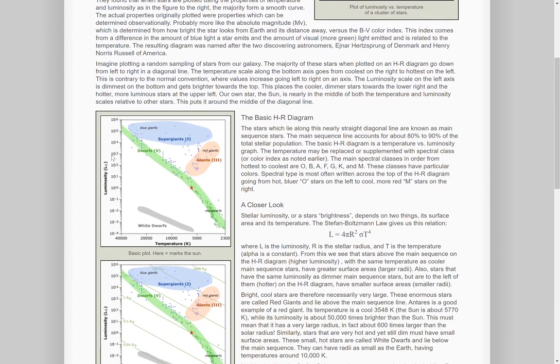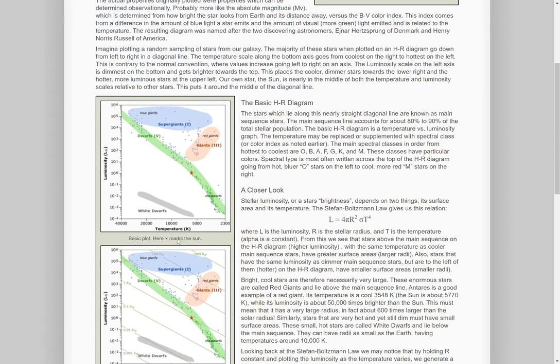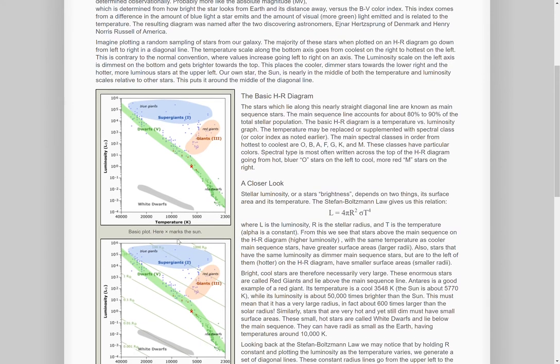On the vertical axis you have the luminosity of a star which means you can connect that to the absolute magnitude, and on the horizontal axis you have the surface temperature which you can connect to the spectral class.